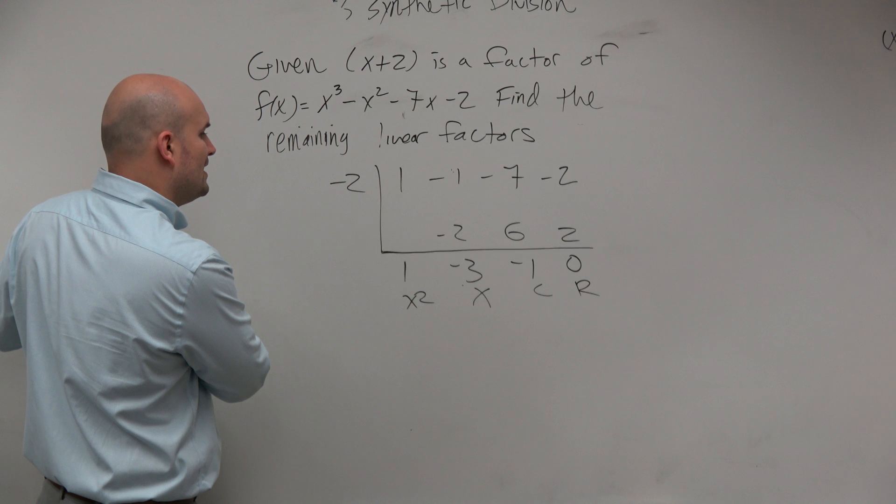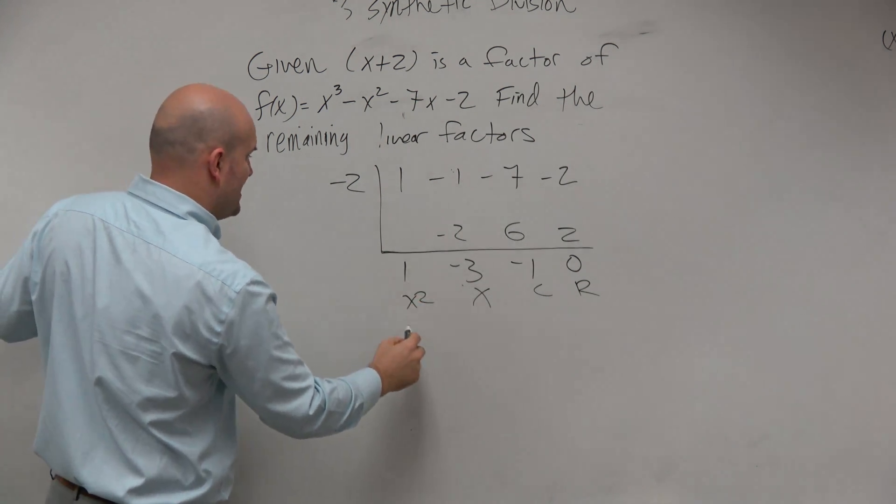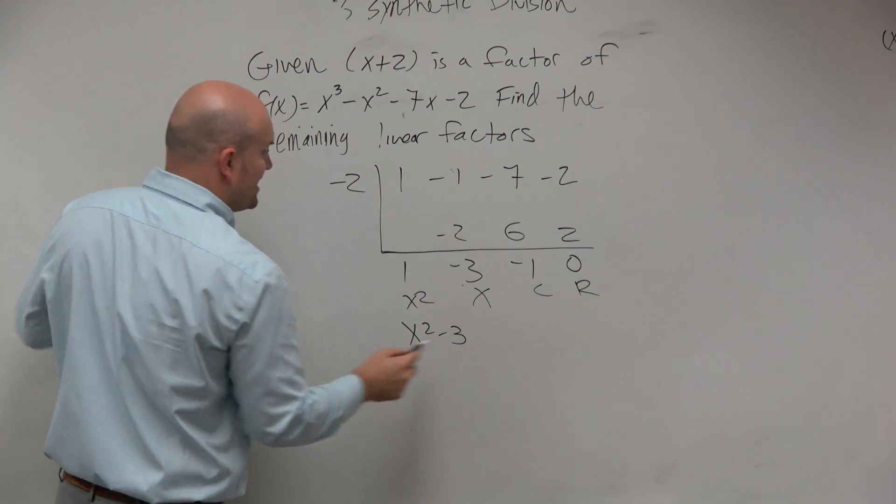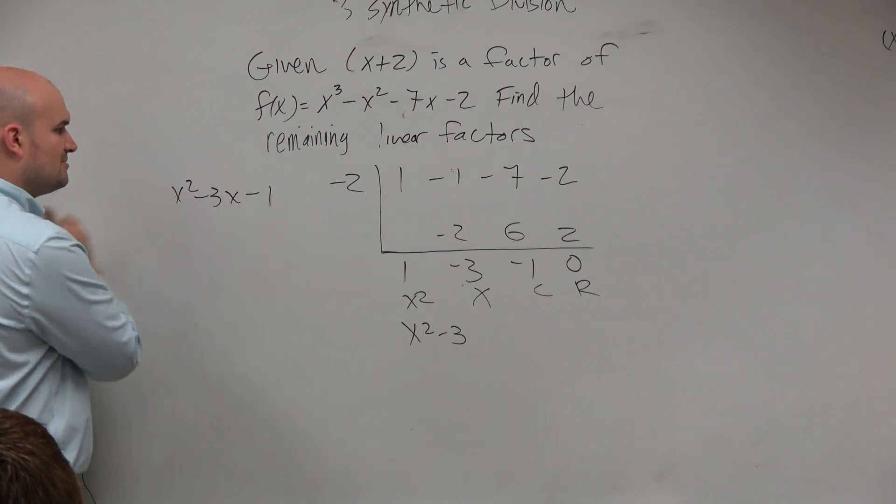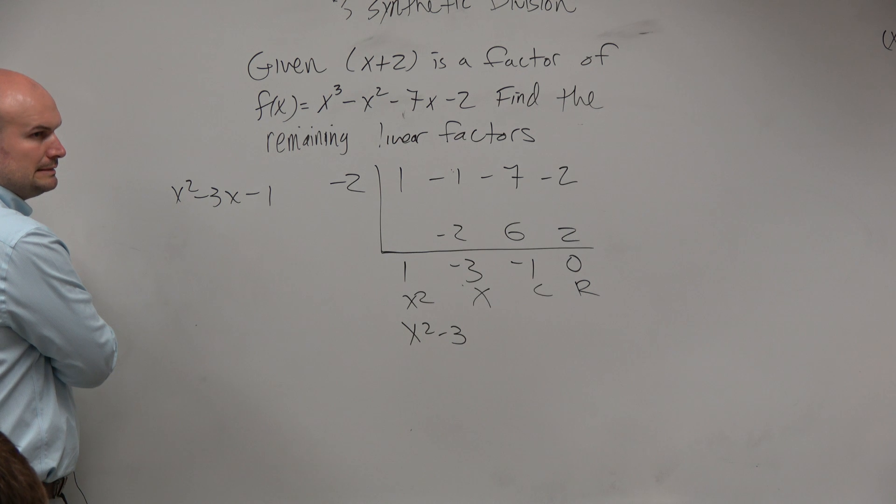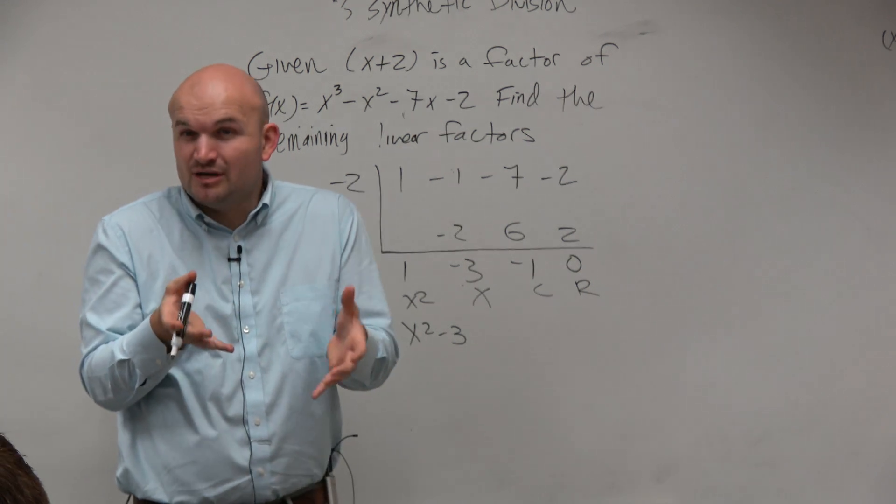So now what I need to do is I see that I have x squared minus 3x. Actually, I'll just move this over here. x squared minus 3x minus 1. Well, what two numbers multiply to give you negative 1, add to give you 3? Uh-oh, that's not going to work. So to find the factors here, I'm actually going to want to find the zeros.